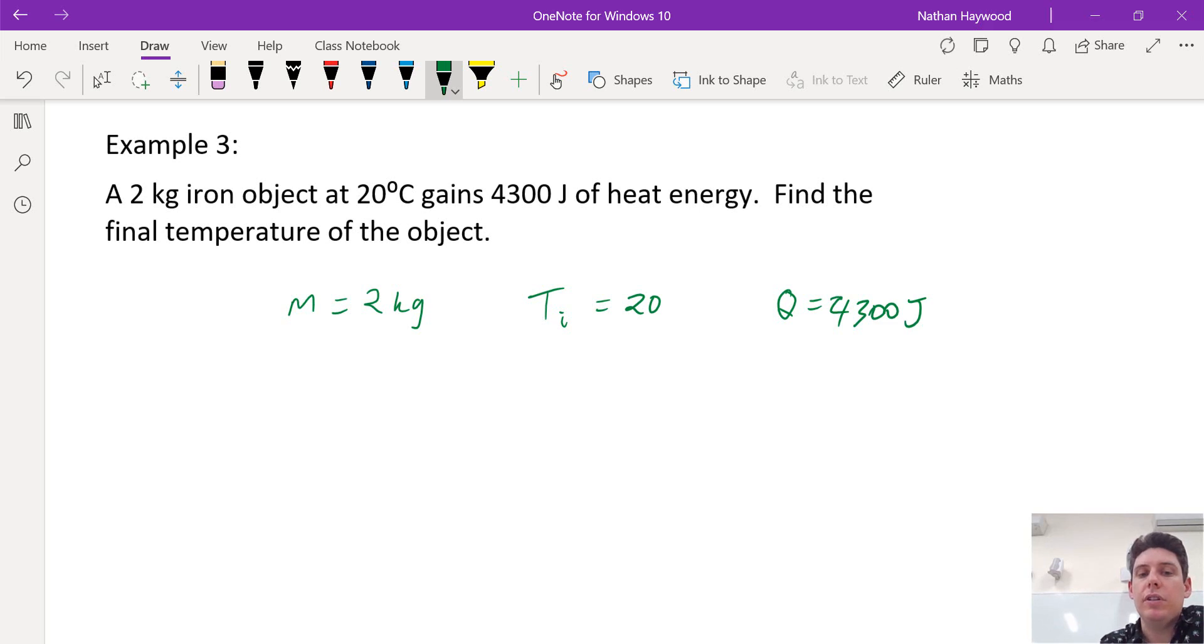Now remember, this is joules, so that's all good. If it was kilojoules, we'd have to convert it. This is kilograms, so we don't have to convert it. And these are called the SI units, standard industry units. So we want it in kilograms, not grams. We want it in joules, not kilojoules.